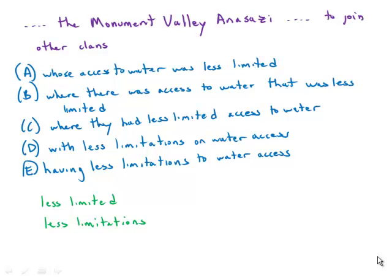Now, for this sentence, first of all, we have to join other clans, and then it's followed by whose or where. Generally on the GMAT, the word where has to modify a physical location.